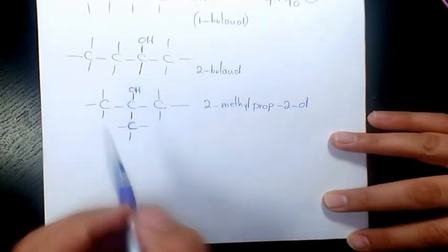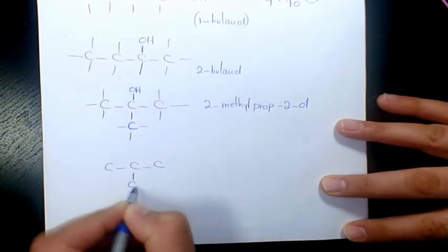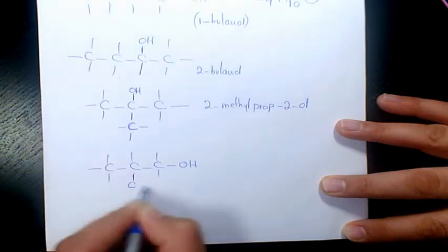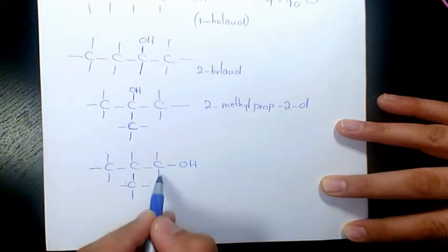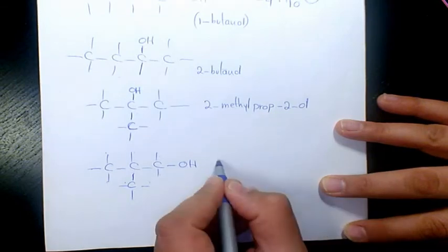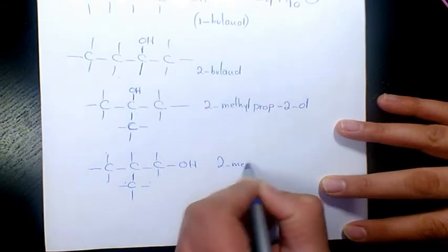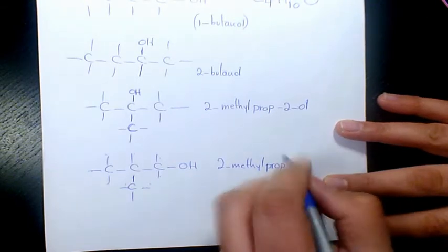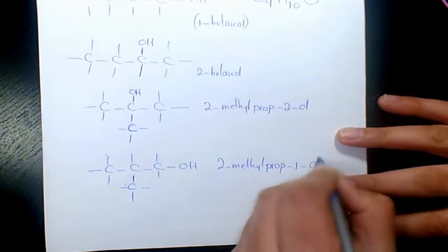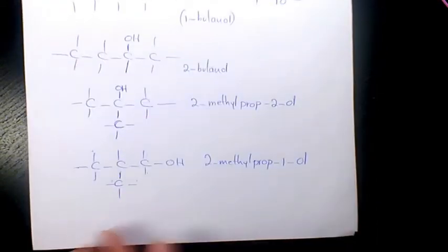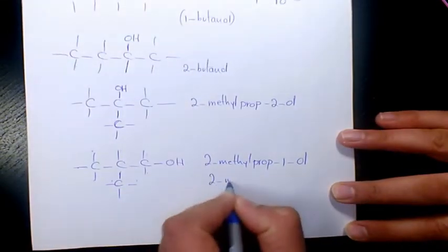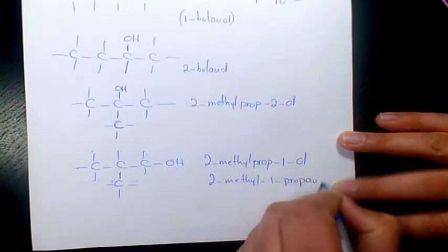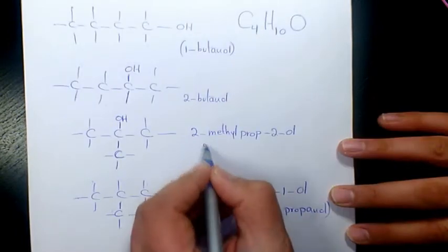We can have the same thing when OH is connected to the first one: 1, 2, 3, 4, 5, 6, 7, 8, 9, 10. So that will be 2-methylwhat-ol, or you can say 2-methyl-1-propanol. That's a little bit older name, or here, 2-methylpropanol to show the location of the OH group.